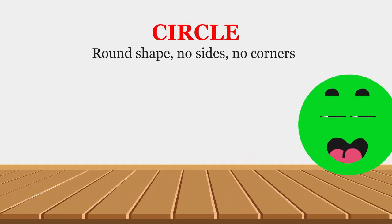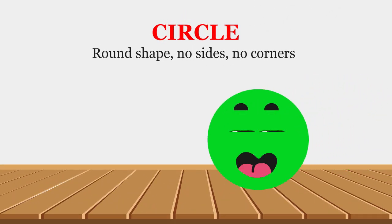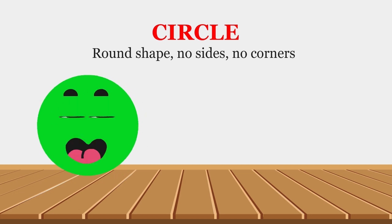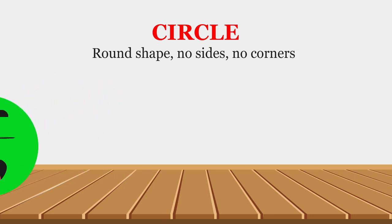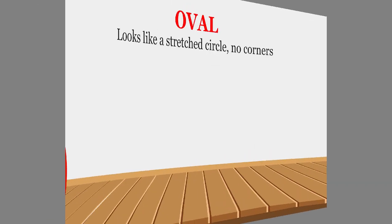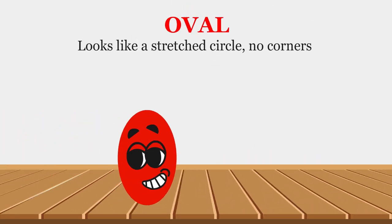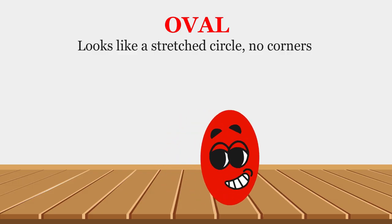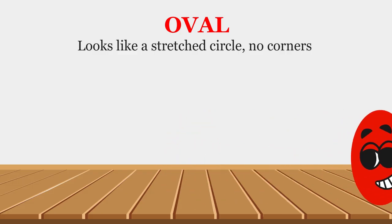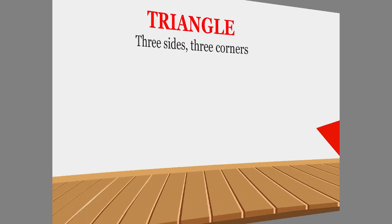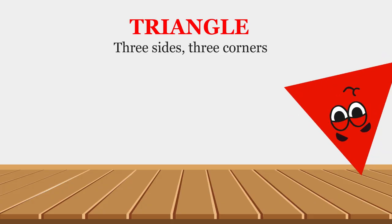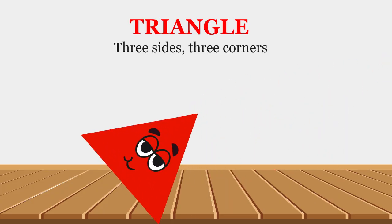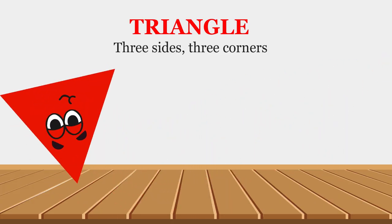Circle: round shape, no sides, no corners. Oval: looks like a stretched circle, no corners. Triangle: three sides, three corners.